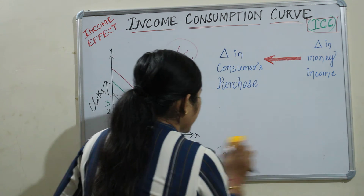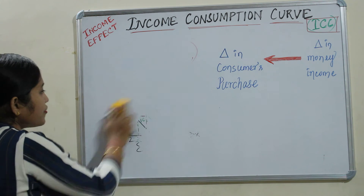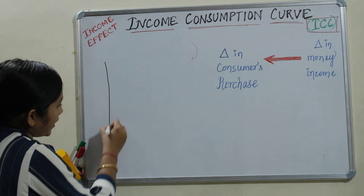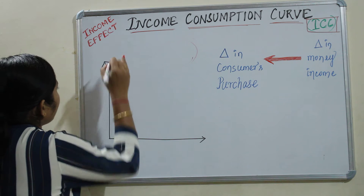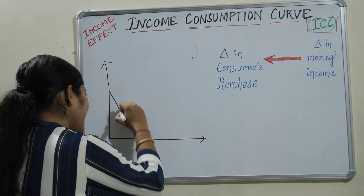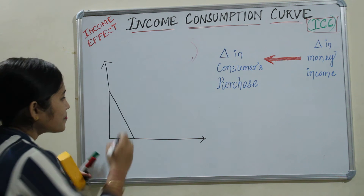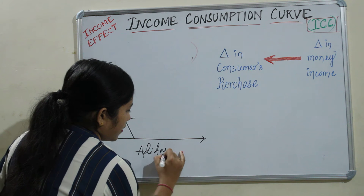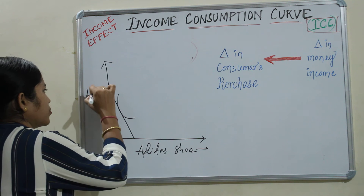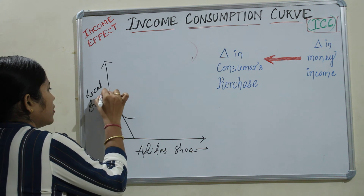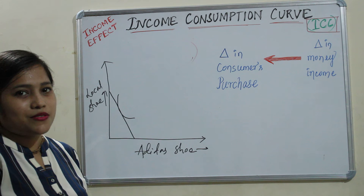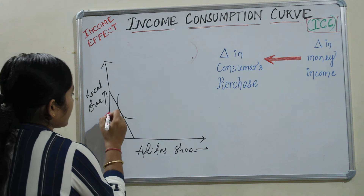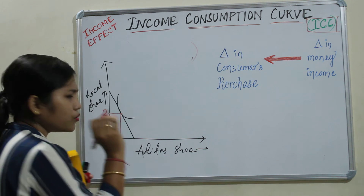Next we will discuss another type of good — that is inferior good. Let's take a normal good, say Adidas shoe, and an inferior good, say a local shoe with no brand. In this amount of income you are consuming two local shoes and two Adidas shoes. Now your income has been increased — do you think you will prefer to purchase more local shoes? No. You will prefer to purchase more Adidas shoes and a lesser amount of local shoes.